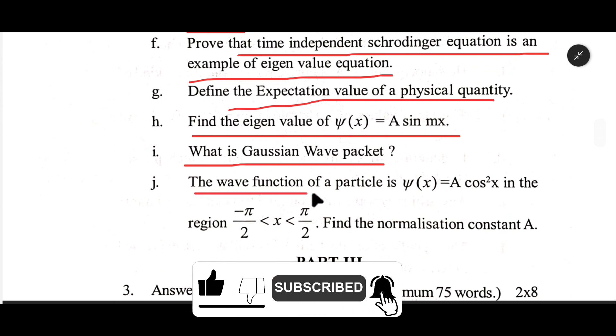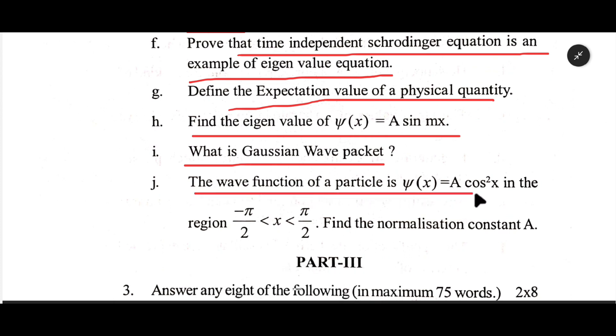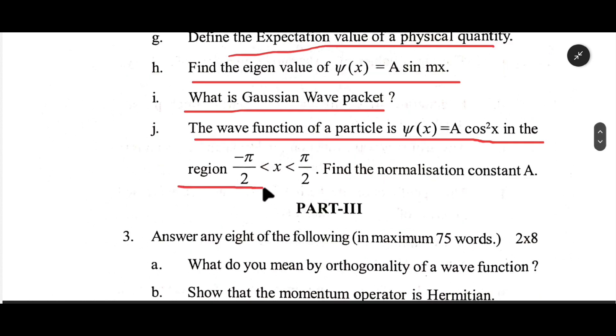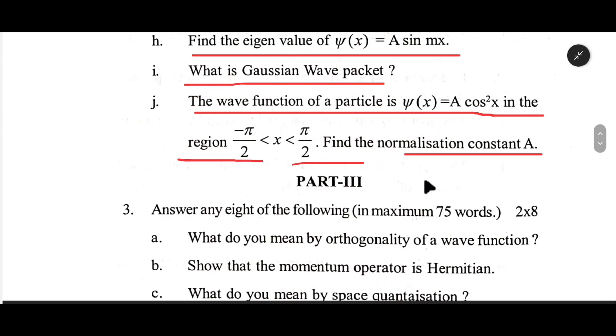j. The wave function of a particle is psi of x equals A cos squared x in the region minus pi half less than x less than pi half. Find the normalization constant A.